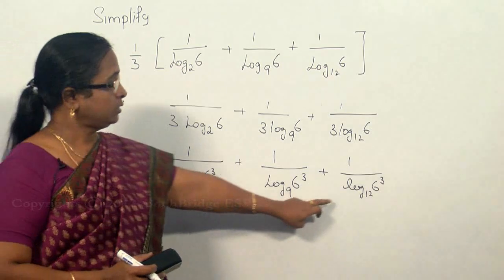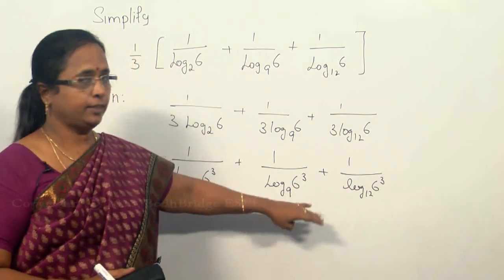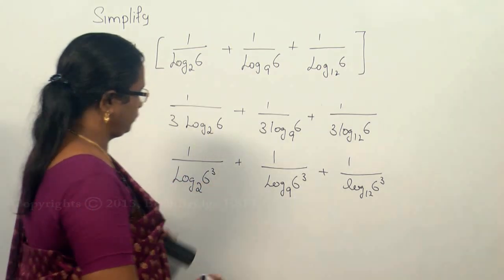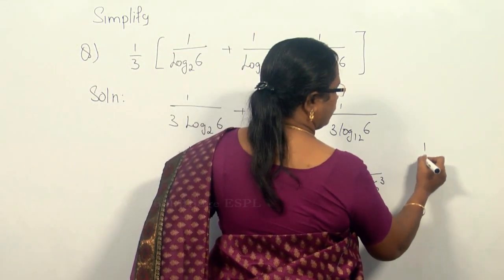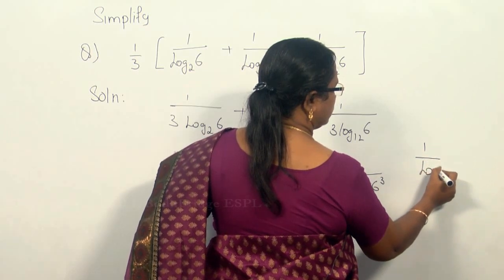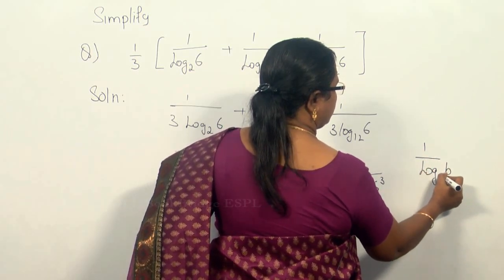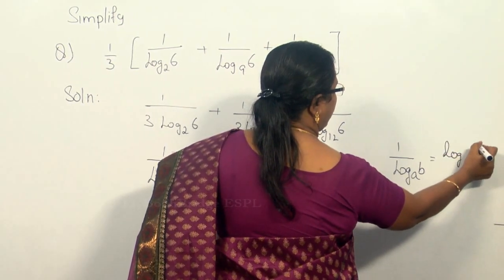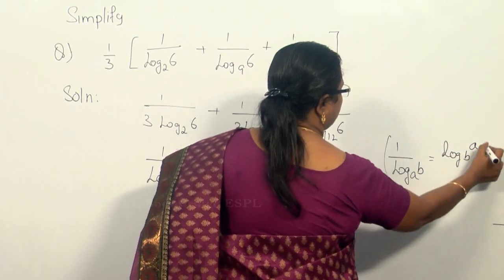Again, the bases are not same, so we have to make the bases same so that we can combine. In order to make the base same, we can make use of the rule: 1 by log B to the base A can be written as log A to the base B. This rule can be applied here.